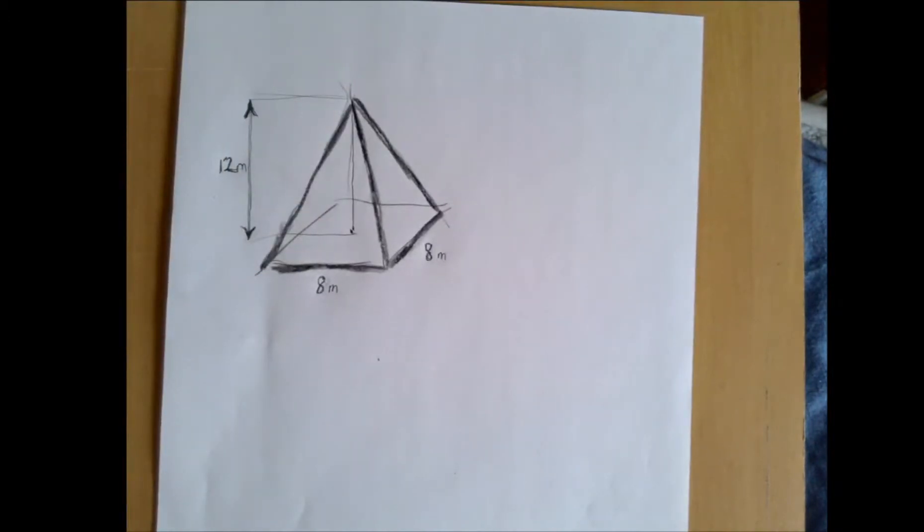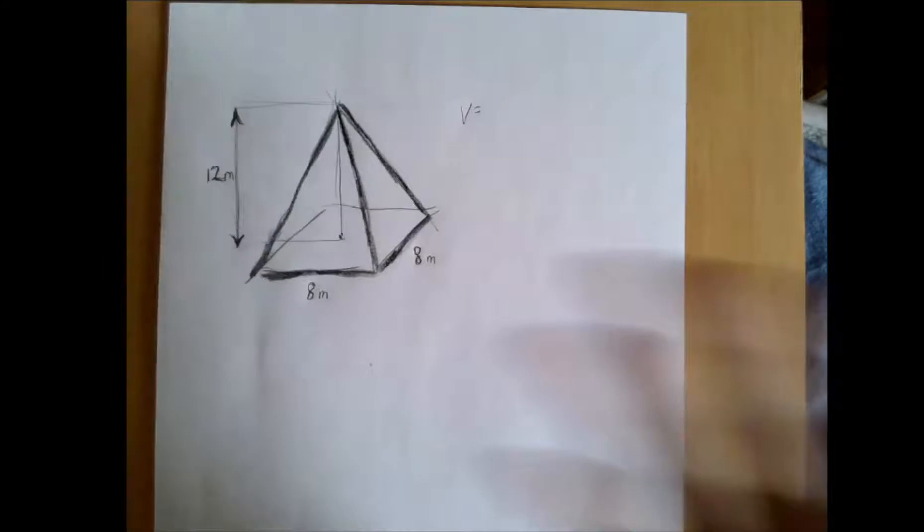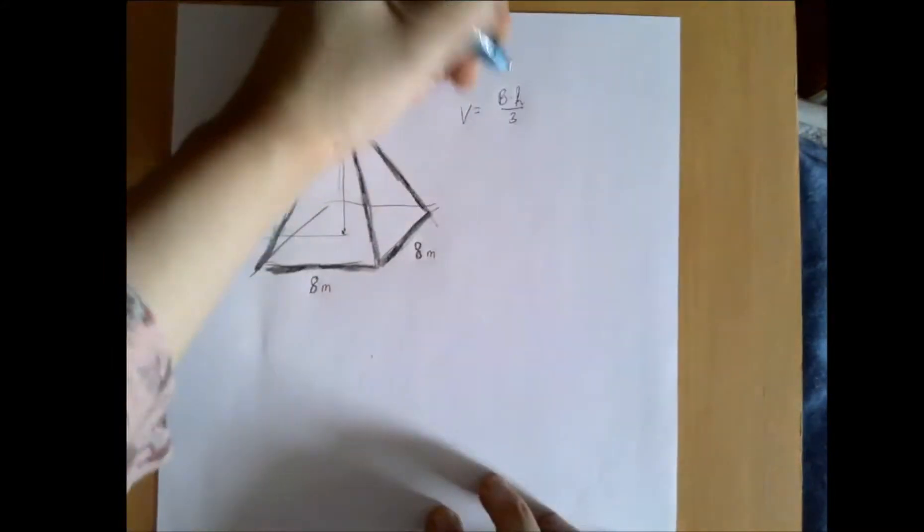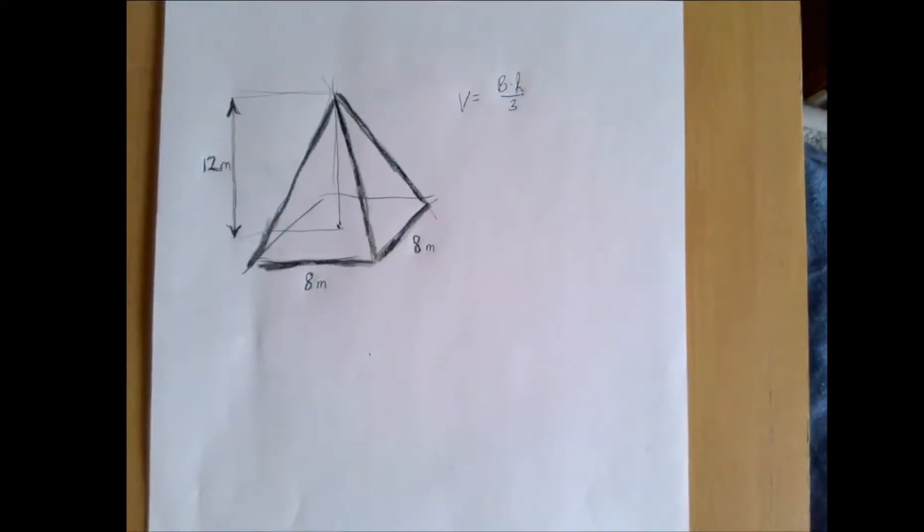These are exactly what we need for a volume. The volume of any object that starts with some kind of a shape and ends in a point is base area times height divided by 3. And what is the base area?